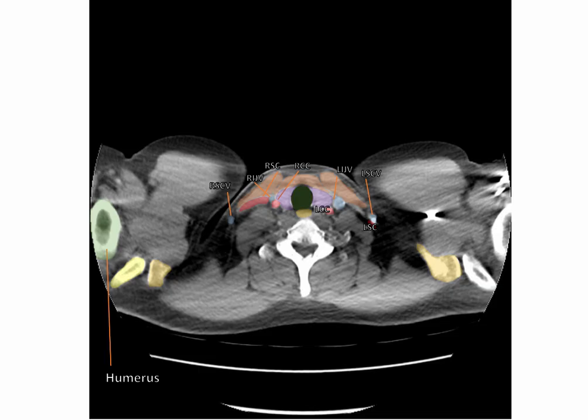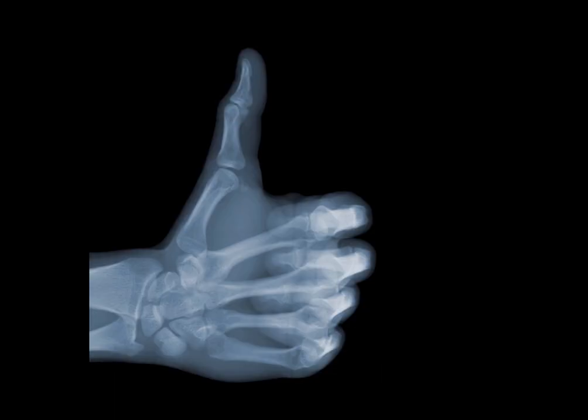This is bounded by the T1 vertebrae, the first pair of ribs and their costal cartilages, and the manubrium of the sternum. A run-through of the same CT scan which we have examined will follow this presentation. You can use this to test yourself. Thank you for listening.